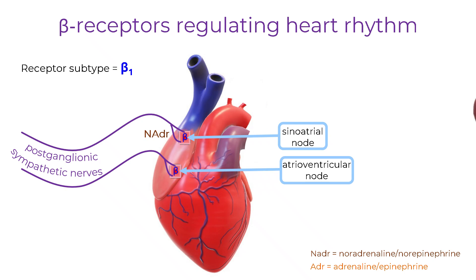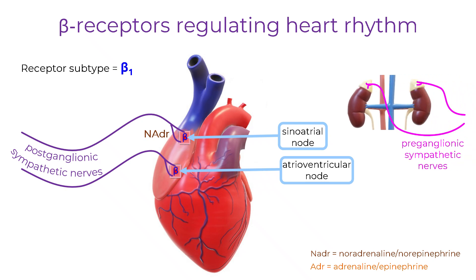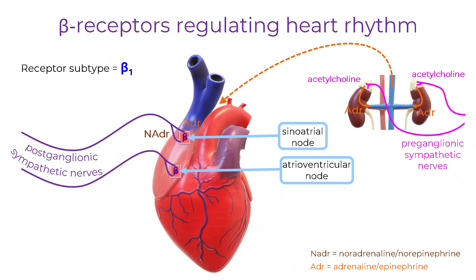The adrenal glands above the kidneys are supplied by pre-ganglionic sympathetic fibres. These release acetylcholine onto chromaffin cells in the adrenal medulla, causing them to secrete adrenaline into the blood. Circulating adrenaline reaches the heart, activates beta-1 receptors and amplifies the effects of nerve-released noradrenaline.